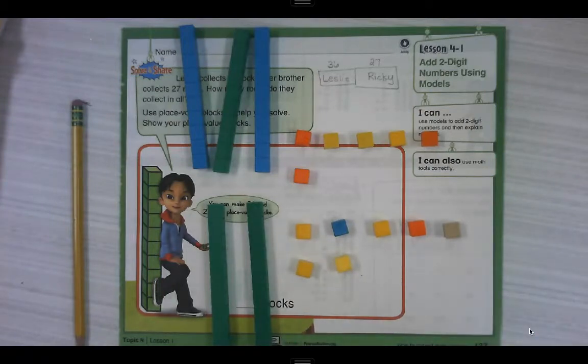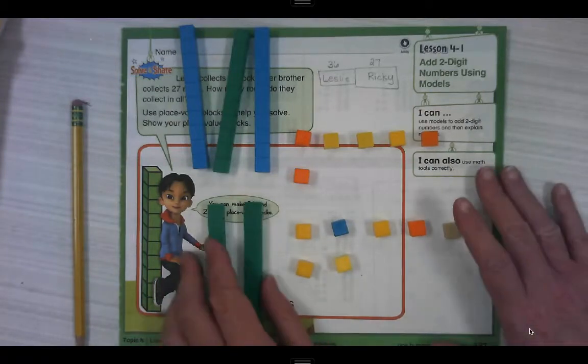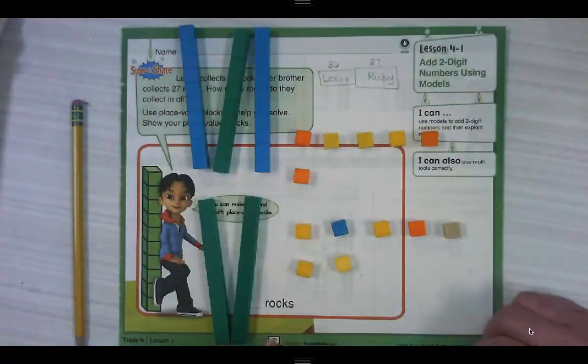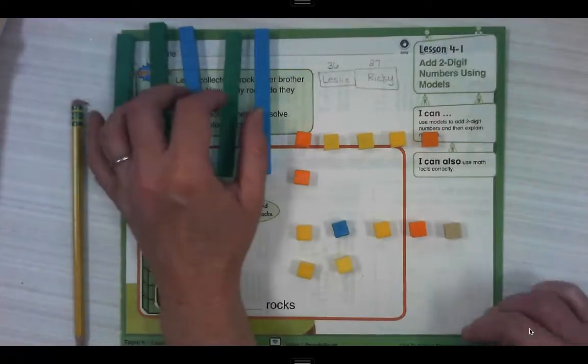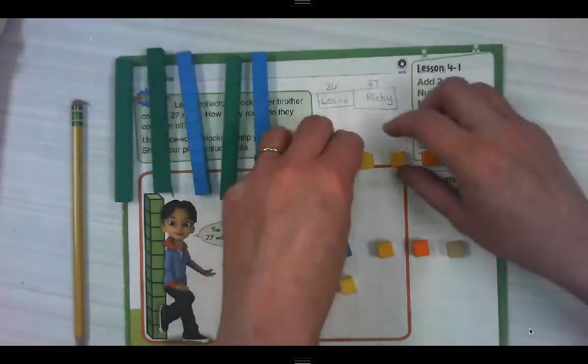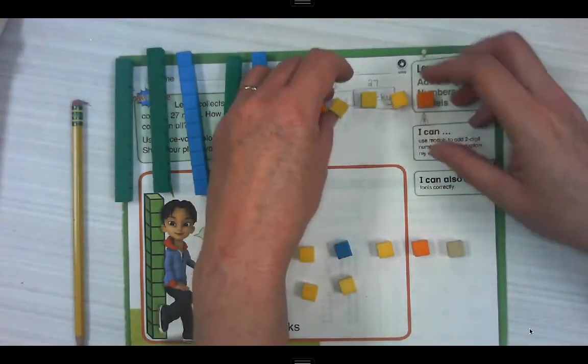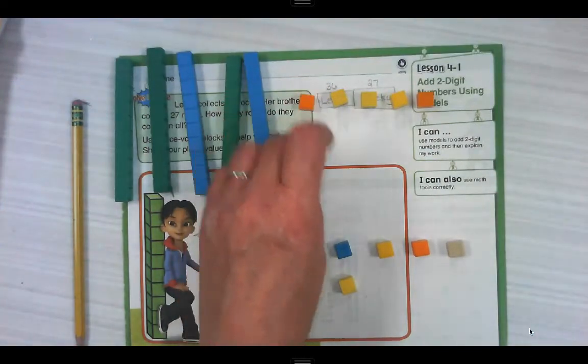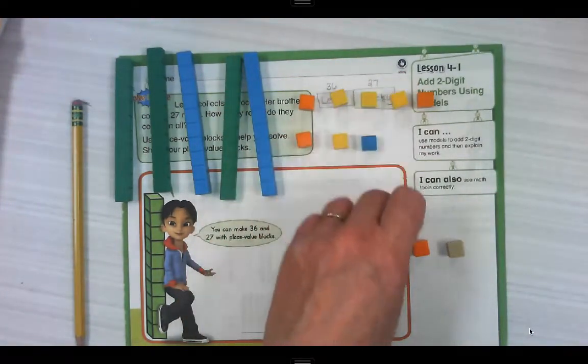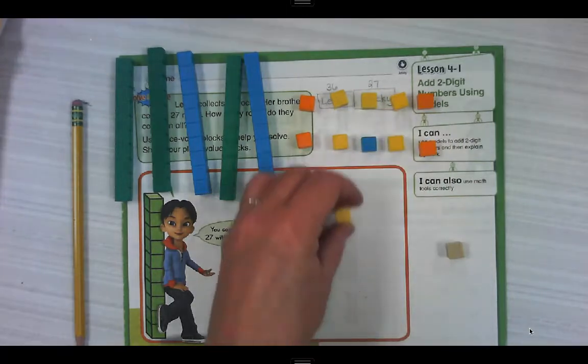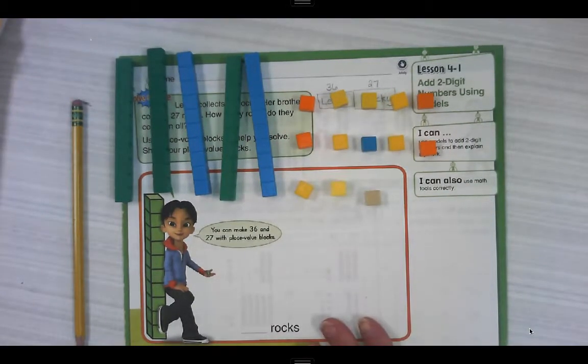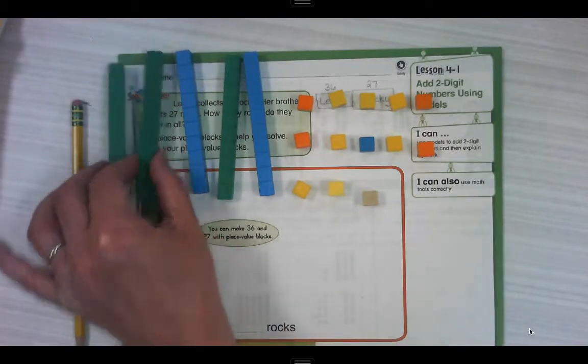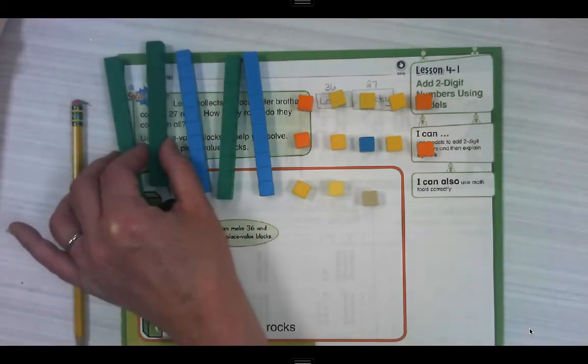Now when we're combining, this is what we do. We just put them all together. So here, I'm going to actually put them together. And we're going to figure out how many we have. Did I change how many were out here? No, I just moved them. I moved them all to be together.